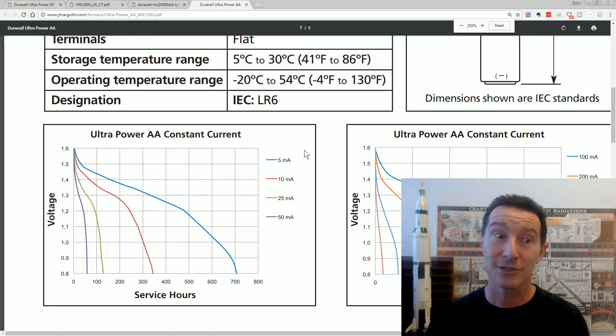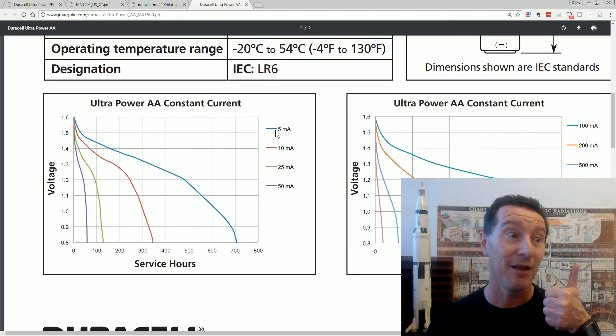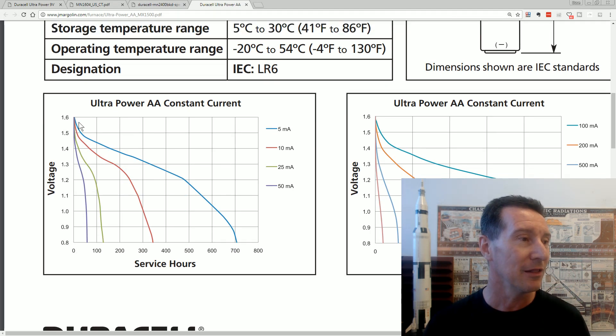So let's have a look at double A's. And surprise, surprise, they actually give us a 5 milliamp constant current graph. Sometimes you win. Look at this. And no, you do not get 700 hours because, as I said, 1.05 volts cut out or thereabouts. And we got, it should get around about 580 hours or thereabouts.